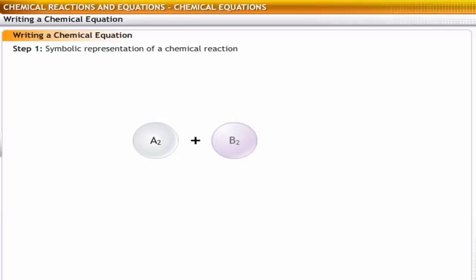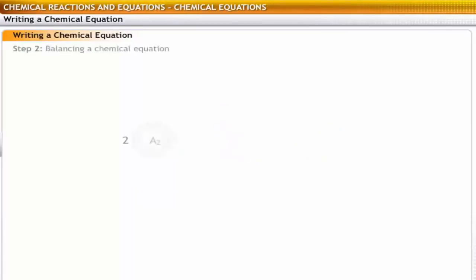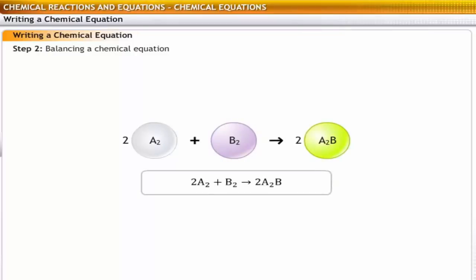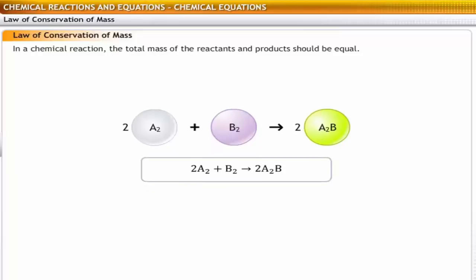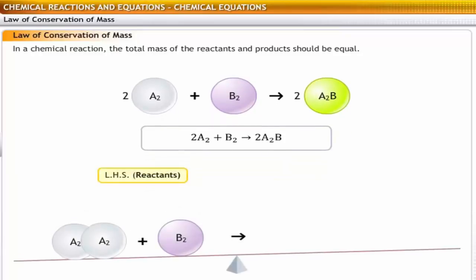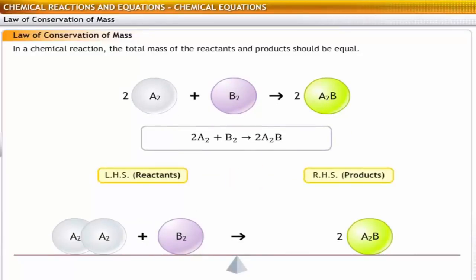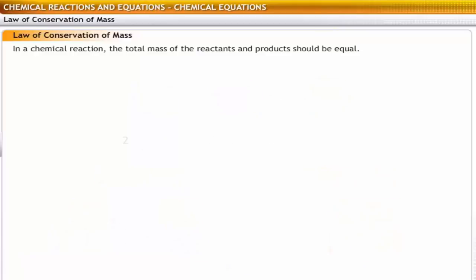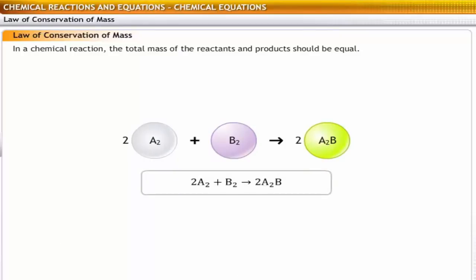A symbolic representation of a chemical reaction is the first step in writing a chemical equation. The next step is to ensure that the equation is balanced, considering the law of conservation of mass. The law of conservation of mass states that the total mass of the reactants and the products should be equal. This means the number of atoms of an element on the reactant side should be the same as the number of its atoms on the product side. All chemical equations must adhere to the law of conservation of mass. Therefore, all chemical equations need to be balanced.